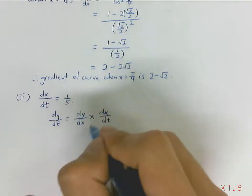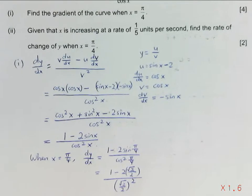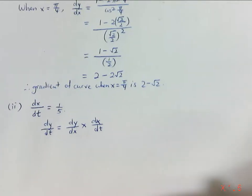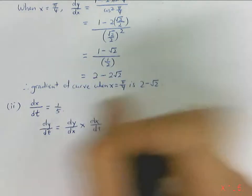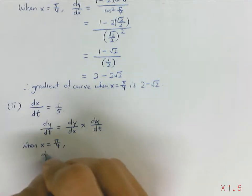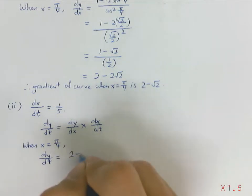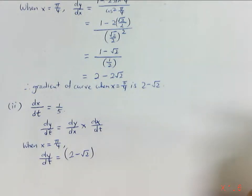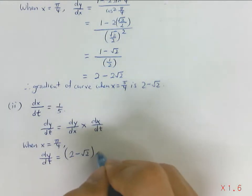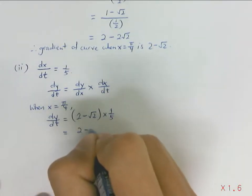So this is related to the gradient function, and that's why they ask the rate of change of y when x equals π over 4, which is exactly the same as part 1. So you can substitute part 1's answer into part 2. When x equals π over 4, dy/dt equals dy/dx, which is this value, 2 minus root 2, multiplied by the rate of change of x, which is given in the question as 1/5. So you just multiply by 1/5, and that will do.